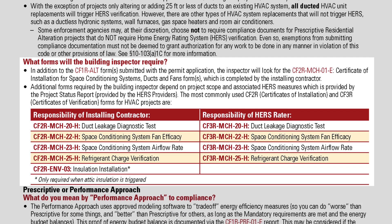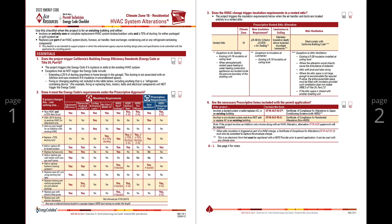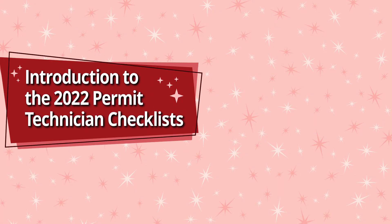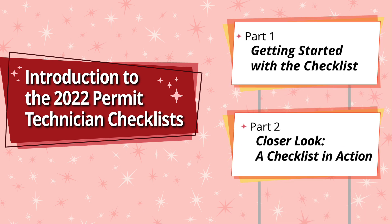This wraps up Part 2 of the permit checklist videos. Remember that pages one and two contain the most essential information for you to perform your permit approval and where you'll spend most of your time consulting. We hope you find the checklists and training videos useful as you continue reviewing incoming permit applications. Be sure to check out the other sections that are of interest.